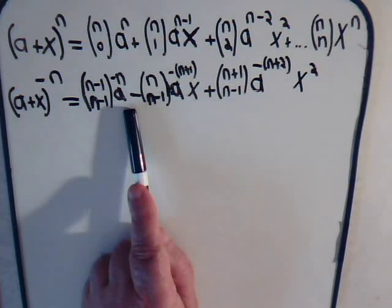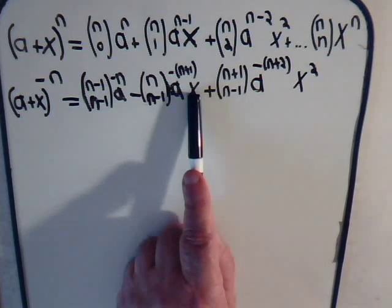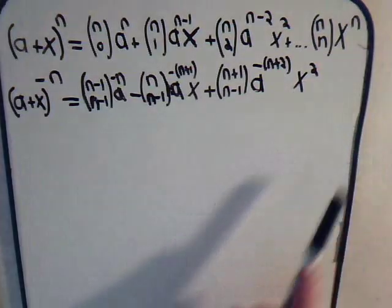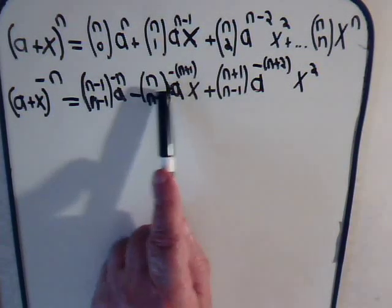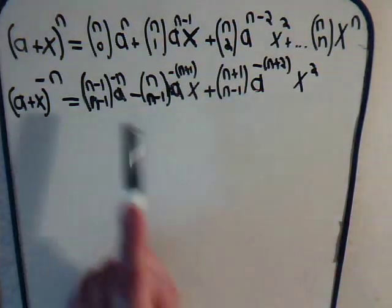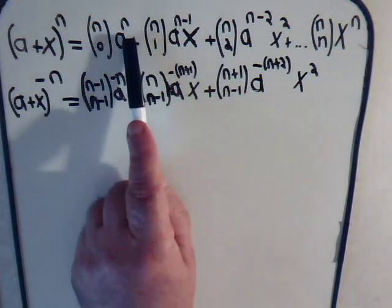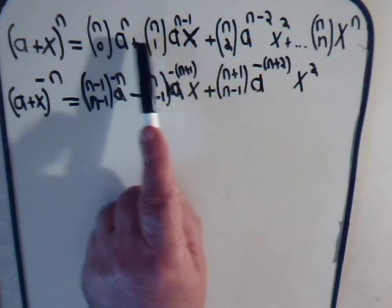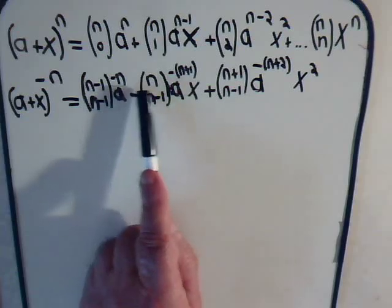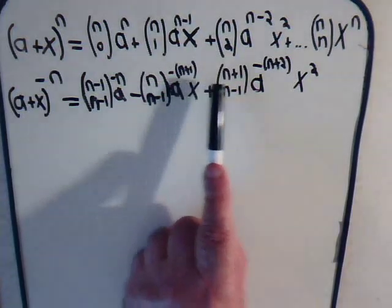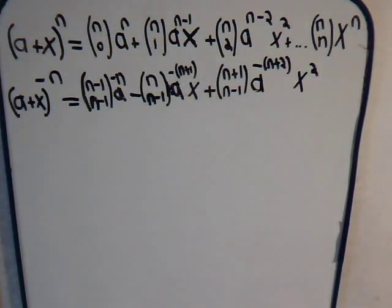Now here x, we can say that this is times x to the 0 which is just 1, and then as we go throughout for each successive term, the exponent of x continues to increase by 1, just as was the case up here. This exponent of the a term continues to decrease by 1 as we go throughout the series.